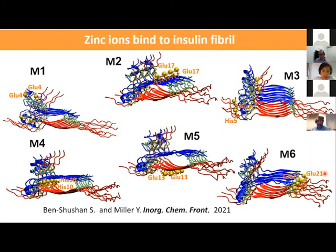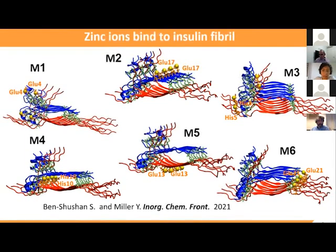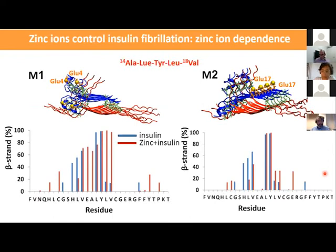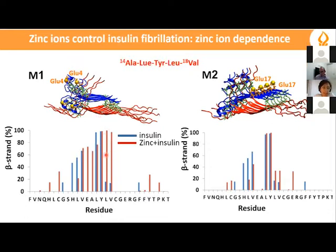We wanted to see how zinc affects insulin fibrillation. Because insulin forms a cross-beta structure and the chain B sequence plays a crucial role in fibrillation, we focused on that region. Interestingly, when zinc binds to glutamic 4, we see that zinc actually induces insulin fibrillation by forming more beta strands. However, when zinc binds to glutamic 17, we see no effect of the zinc ion on insulin fibrillation.